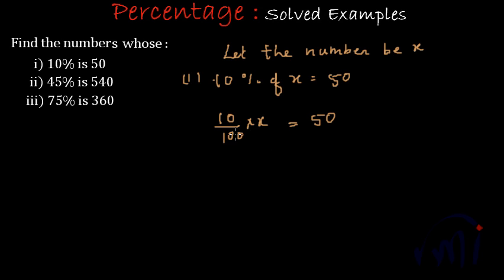If I solve it further, this 0 will cancel this 0, and from here we will get x by 10 is equal to 50, or x is equal to 50 multiplied by 10, that is 500. So the result for the first question is 500.